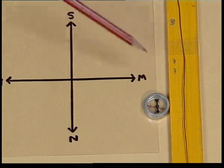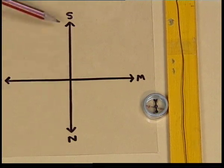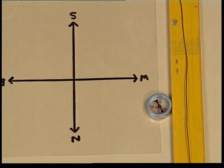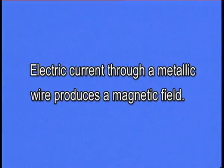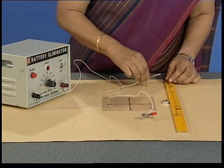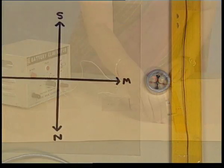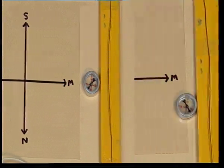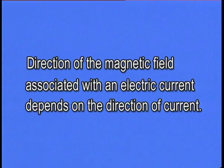The compass needle comes back to the initial north-south position when the current is switched off. When we switch on the current again, the deflection is there again. So we can conclude that a current carrying wire behaves like a magnet, or in other words, electric current through a metallic wire produces a magnetic field. If we reverse the direction of current in the wire, the direction in which the compass needle pointed also gets reversed. So the direction of magnetic field depends on the direction of current.